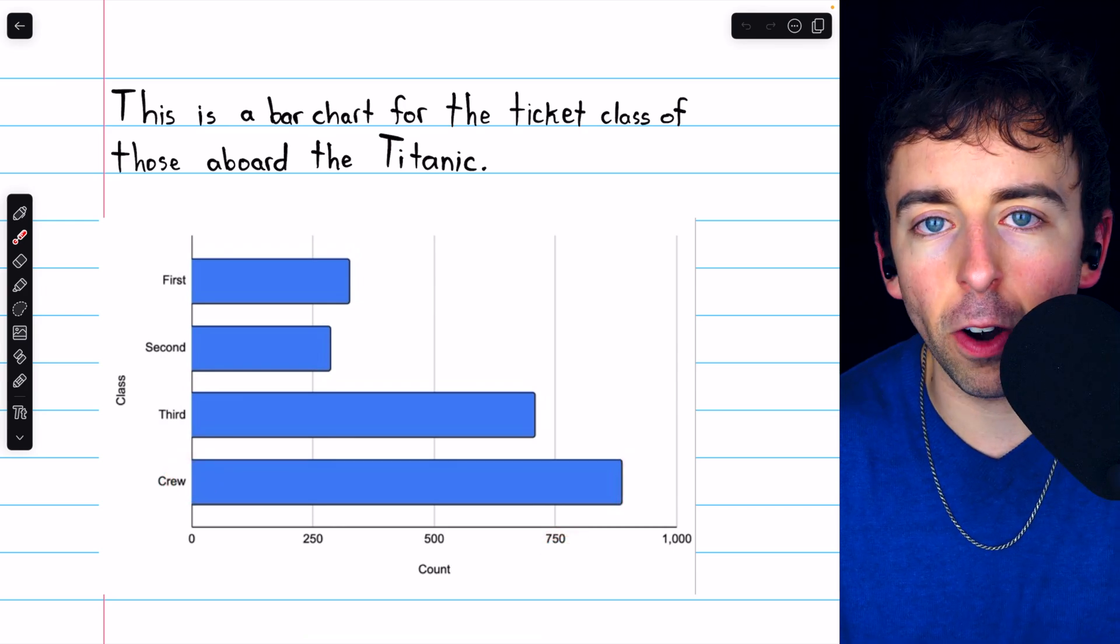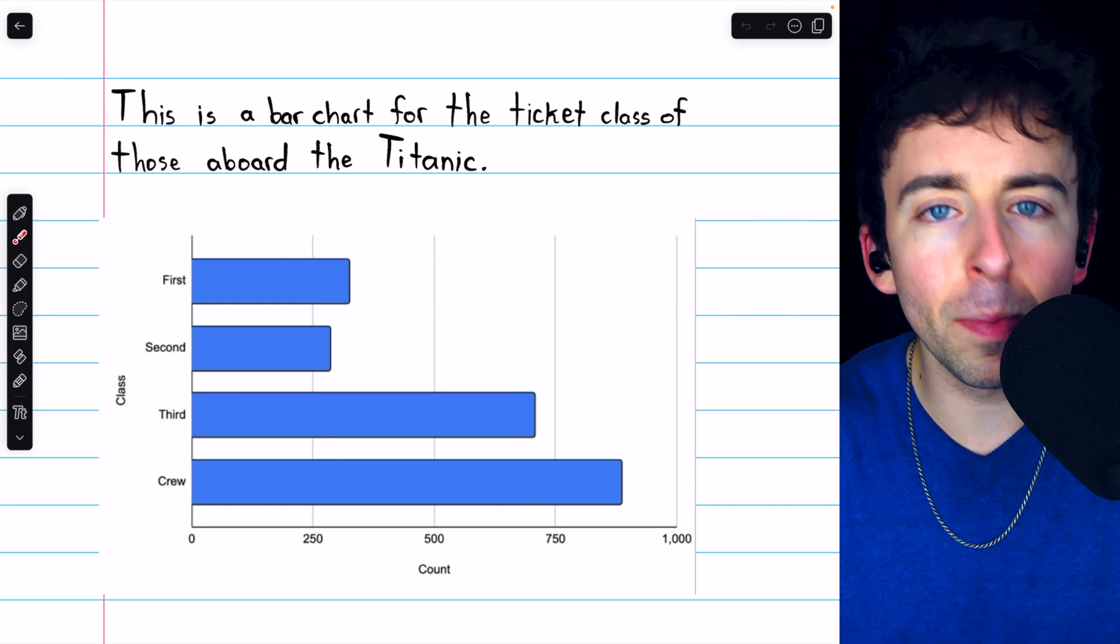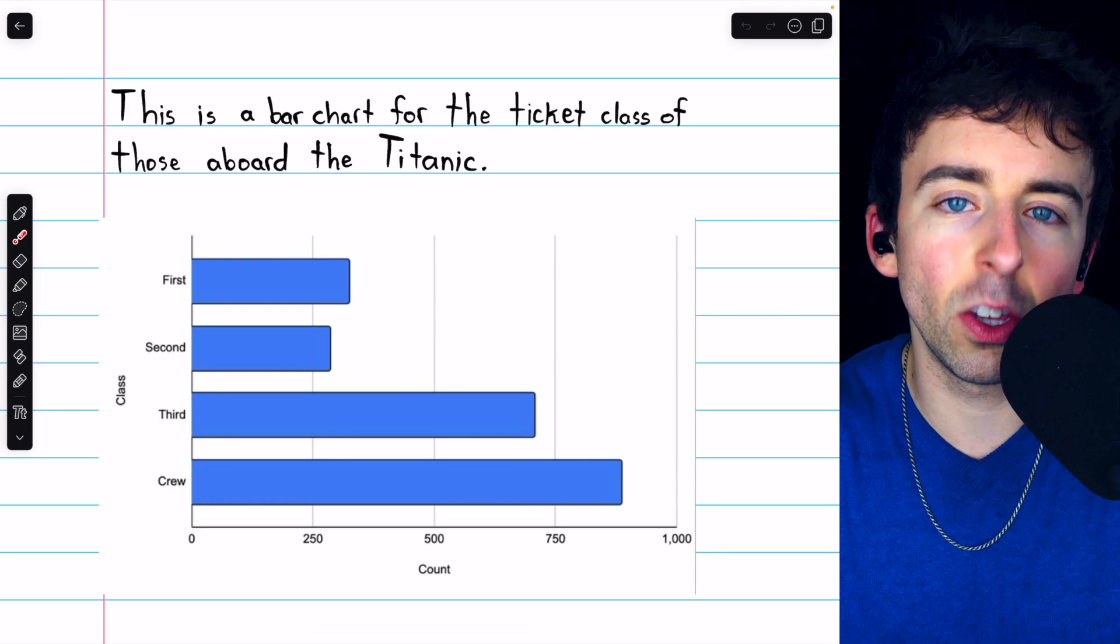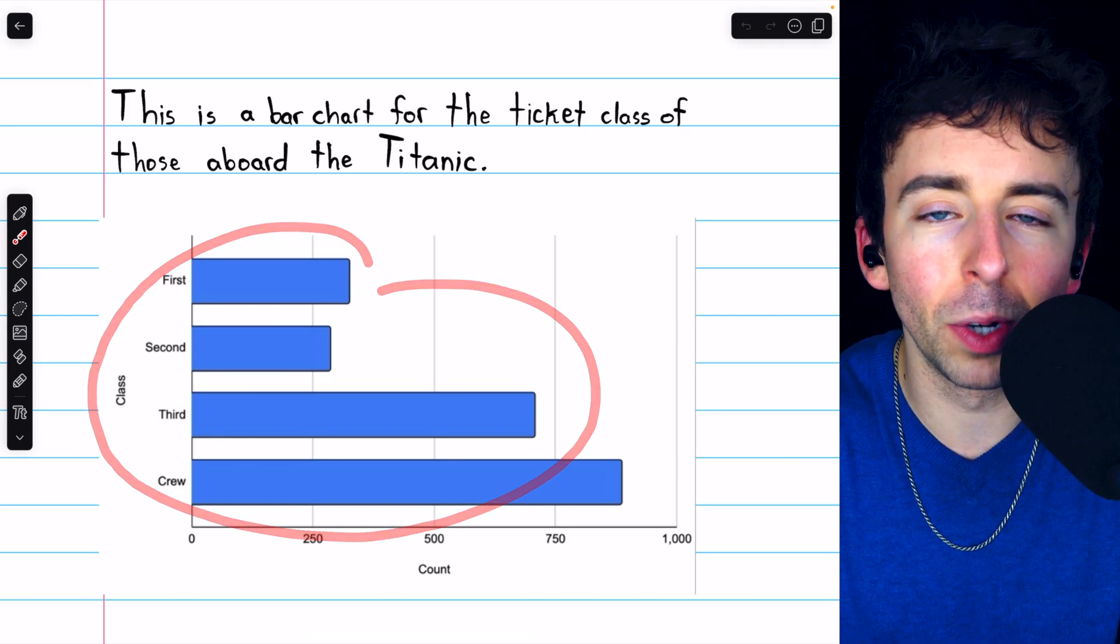When we compared bar charts and pie charts, link in the description, we saw that in general bar charts are a bit more versatile and widely usable than pie charts. But there are some ways that a bar chart can be screwed up.